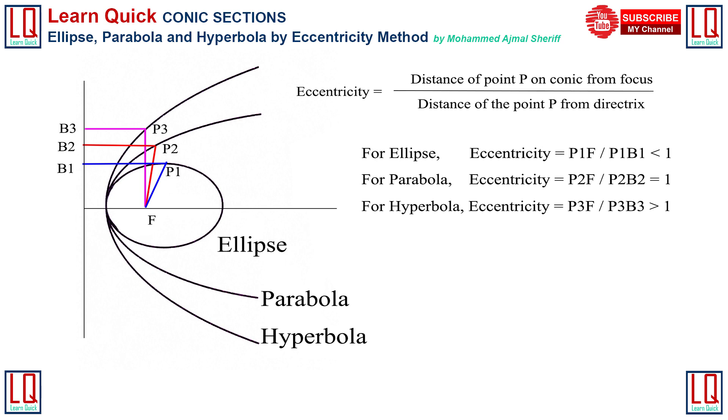Consider the point P lies in the position of vertex V. If VF by VB is less than 1, the conic section is ellipse. If VF by VB is equal to 1, the conic section is parabola. If VF by VB is greater than 1, the conic section is hyperbola.